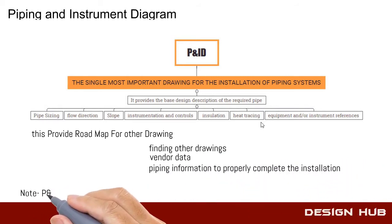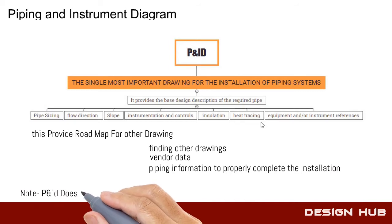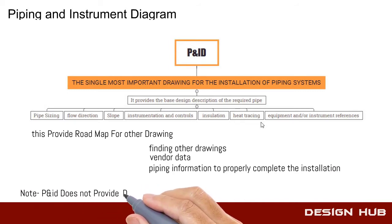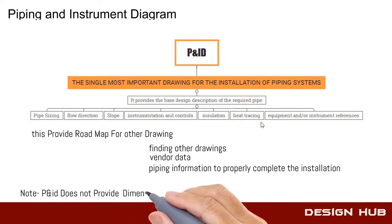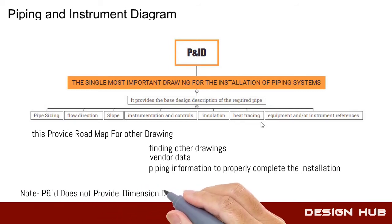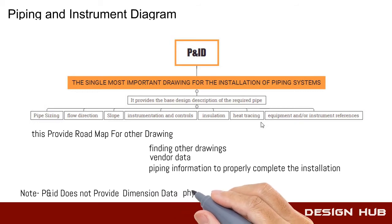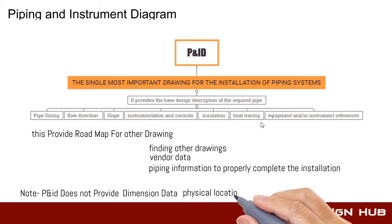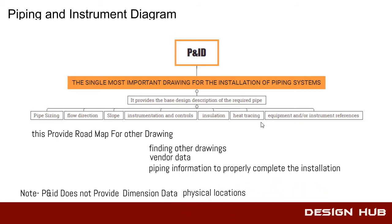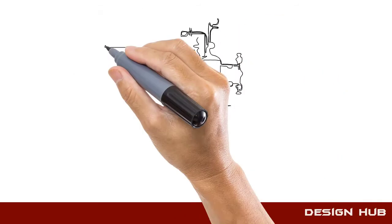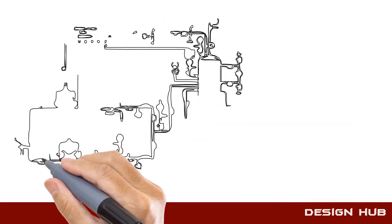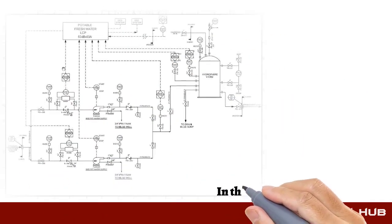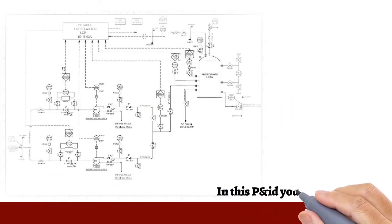In P&ID, there are no dimensions, physical location, or related information. See this P&ID drawing and check all information.